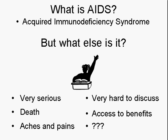The next slide says: What is AIDS? Obviously, this is what it stands for — Acquired Immunodeficiency Syndrome. 'Syndrome' here means a group of symptoms, and not everybody has the same symptoms — we'll talk about that more in the future. What else is it? For most people, it's very serious, and for a lot of people it indicates death, although we'll see time and again in this class that that doesn't have to be the case. An AIDS diagnosis is not a death sentence. It means aches and pains for some, and it can be very hard to discuss. But an AIDS diagnosis also helps give people access to benefits, and that can be a really important piece of what else AIDS is.